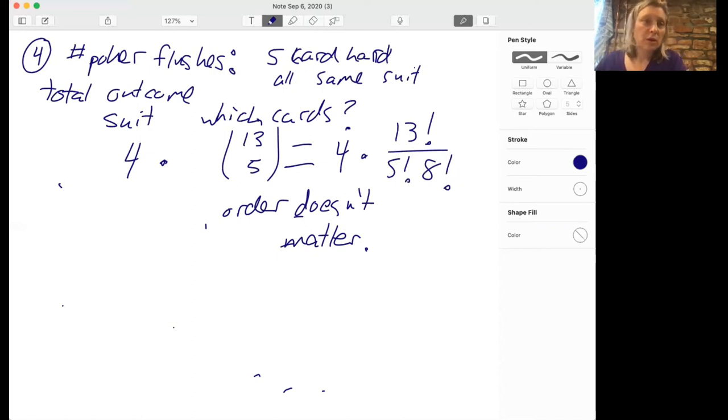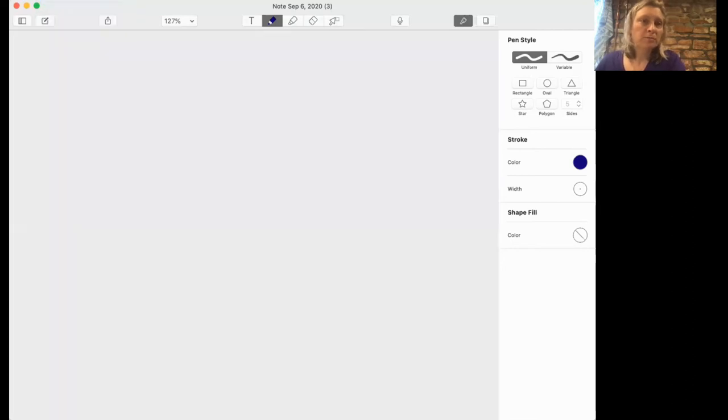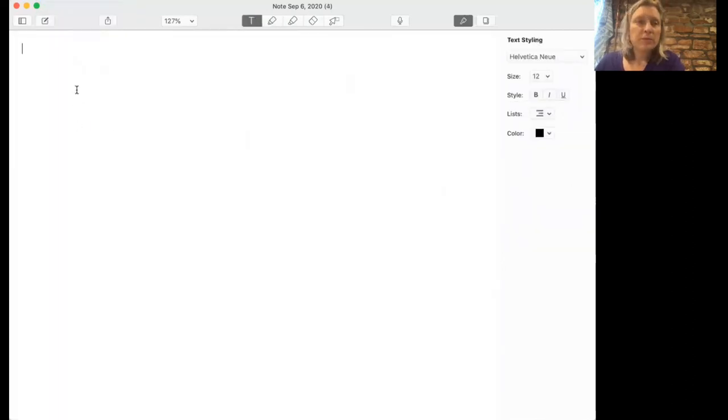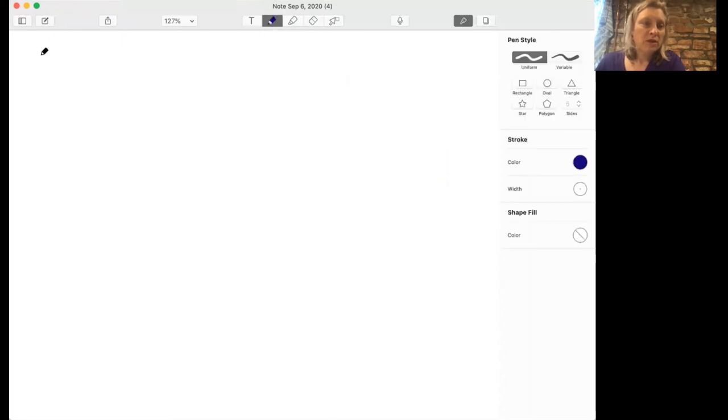Let's do one more problem. I think this is maybe the hardest one that we've done today. What number are we on? Five. So let's say we have six jobs and five people. And we want to pair up the jobs with the people. And each person needs at least one job.